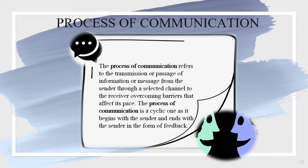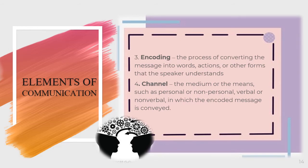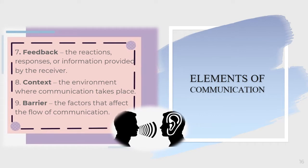Here are the processes of communication, where it begins with the sender and ends with the sender in the form of feedback. We have nine elements of communication: the speaker, the message, encoding, the channel, decoding, the receiver, the feedback, the context, and the barrier.